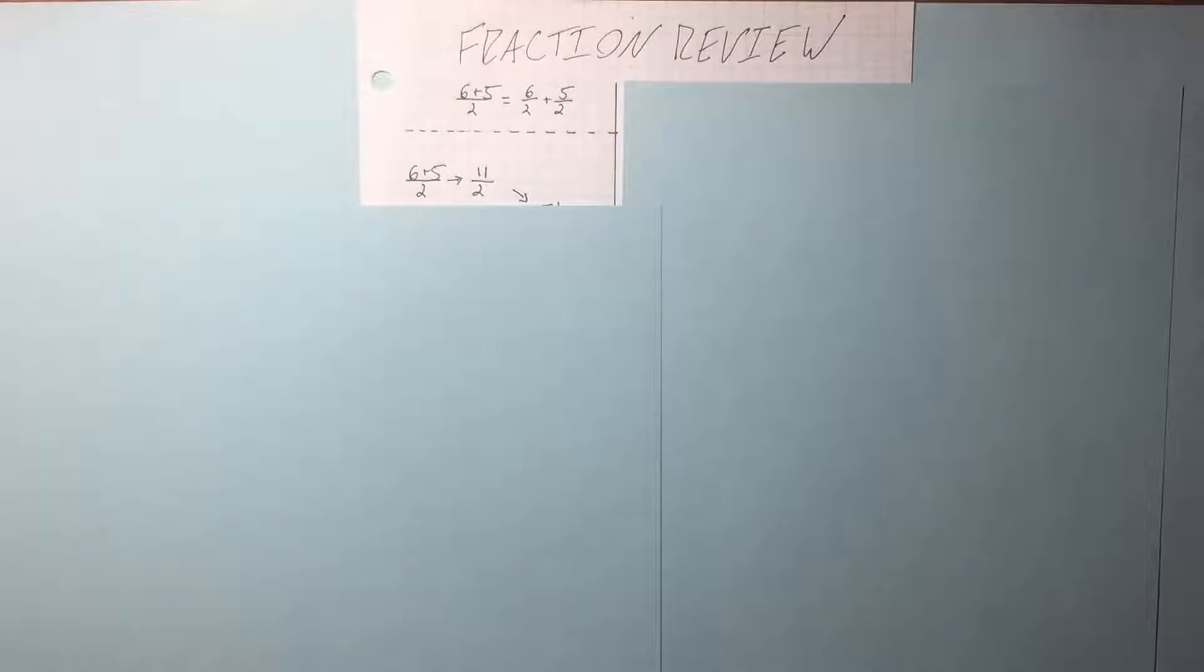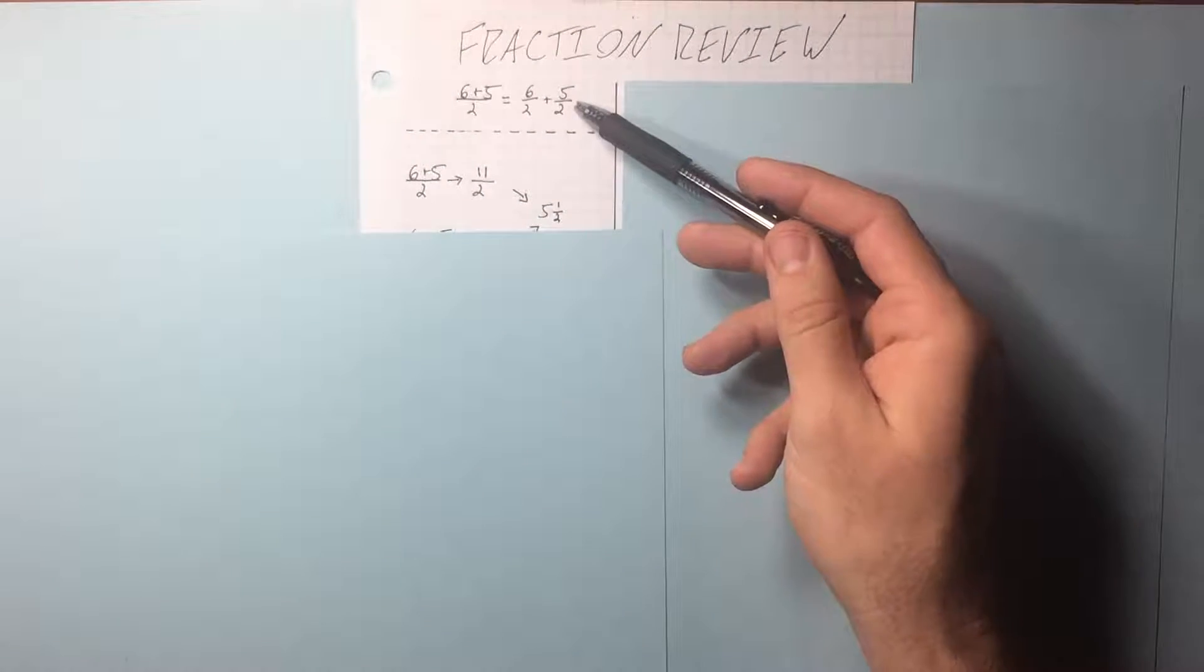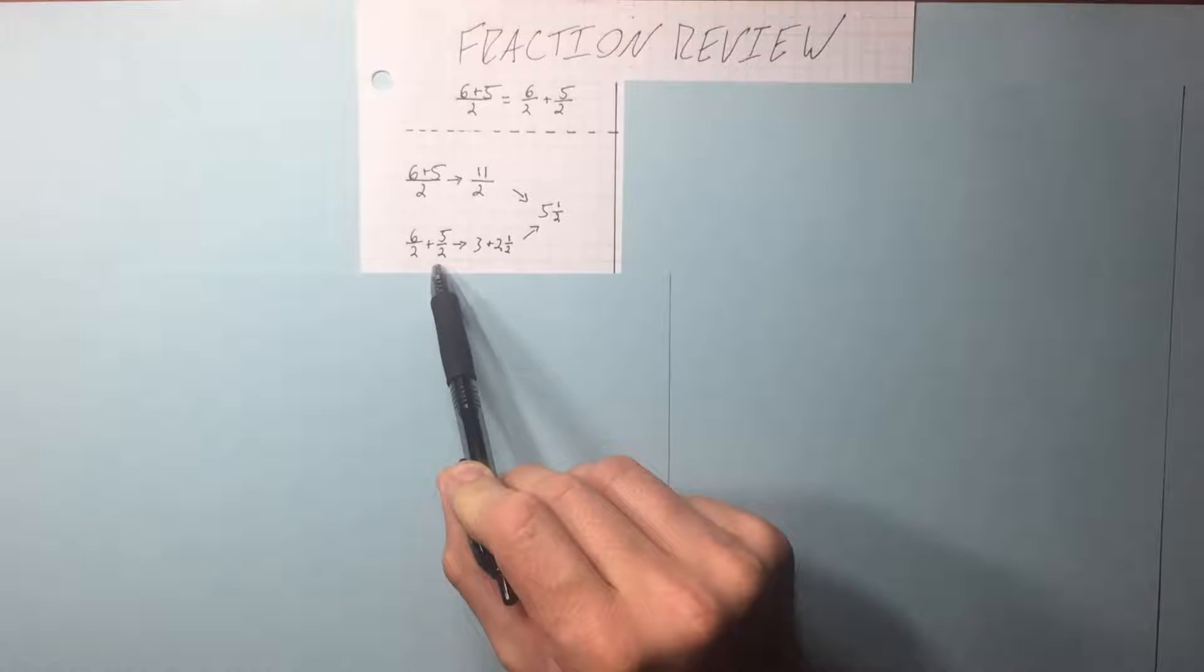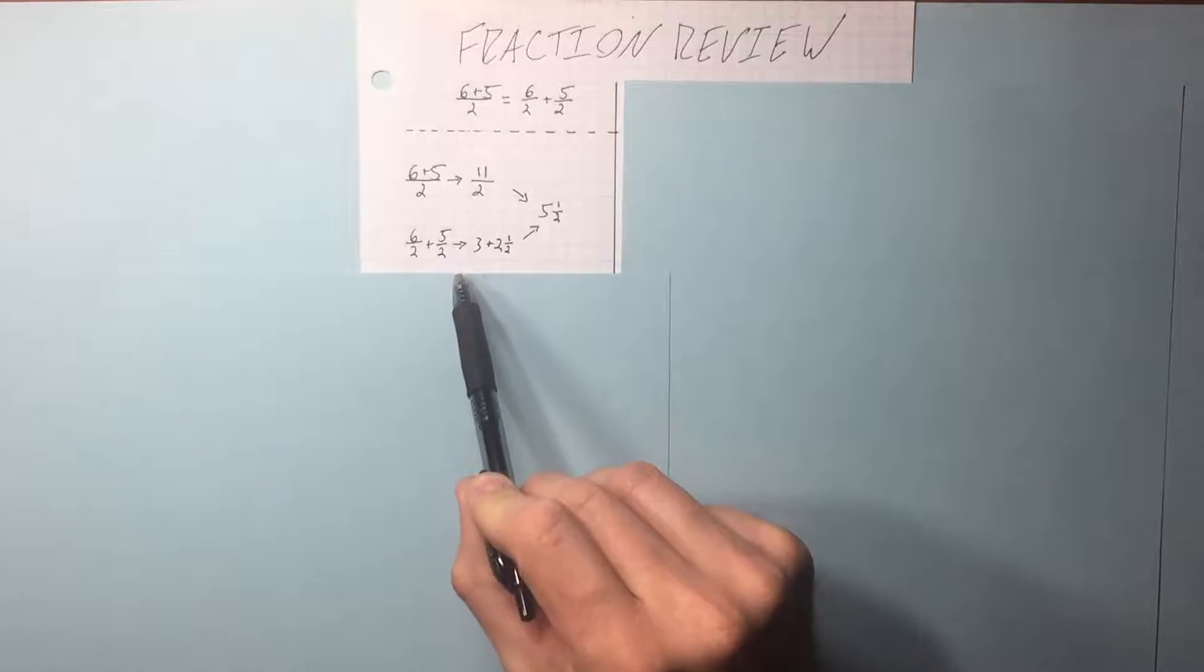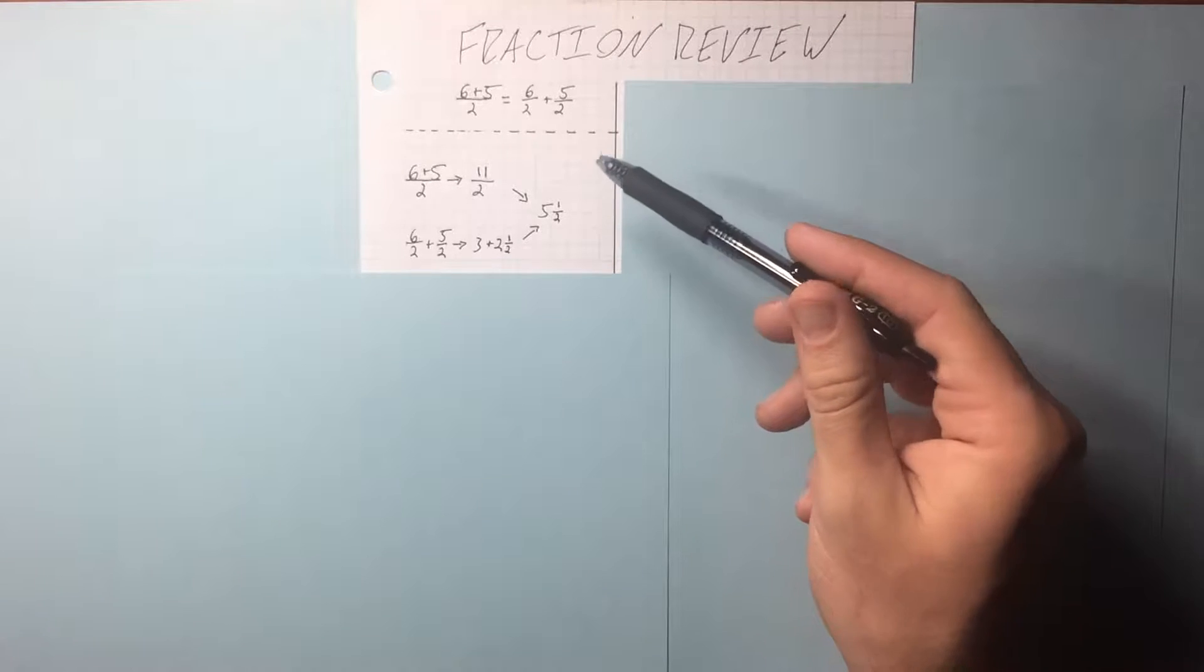Let's first do finishing the numerator. 11 over 2 equals 5 and a half. Now to show you that it's the exact same thing, I'm going to keep them separate and do the division first. We get 3 and 2 and a half, and when you add them up, it also equals 5 and a half.